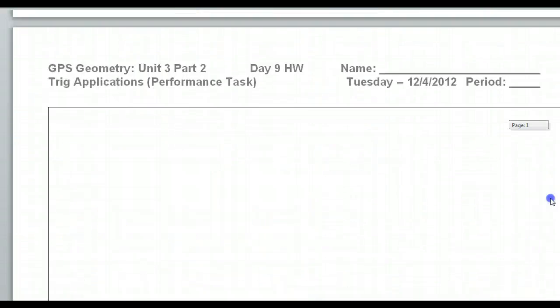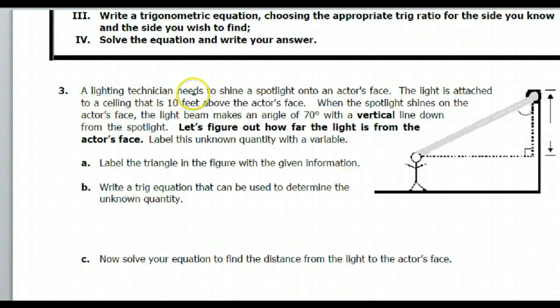Problem number three. A lighting tech needs to shine a spotlight onto an actor's face. That's the spotlight, that's the face. The light is attached to a ceiling that is 10 feet above the actor's face. So that means this distance right here, face to ceiling, that's 10. When the spotlight shines on the actor's face, the light beam makes an angle of 70 degrees with the vertical line. So this is 70 degrees. Let's figure out how far the light is from the actor's face. So that's going to be the hypotenuse. So I'll go ahead and call that x, because that's what we were just asked to find.